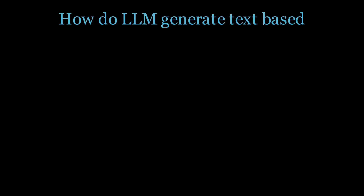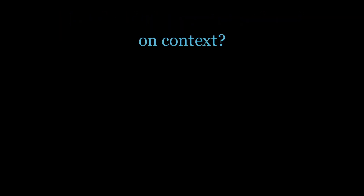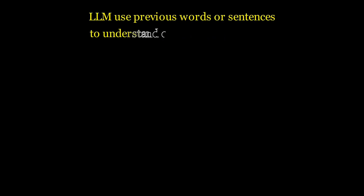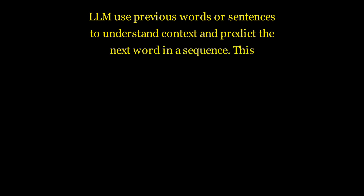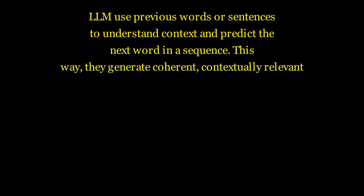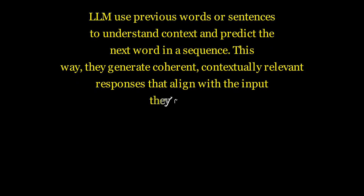How do LLMs generate text based on context? LLMs use previous words or sentences to understand context and predict the next word in a sequence. This way they generate coherent, contextually relevant responses that align with the input they are given.